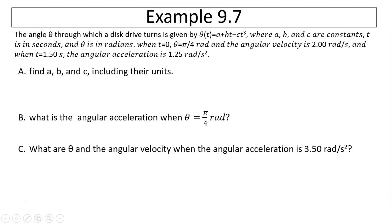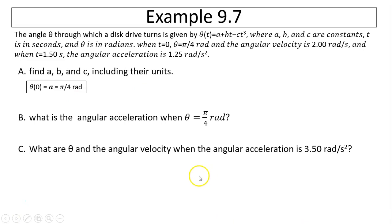Let's look at another example. The angle theta through which a disk drive turns is given by theta(t) equals a plus bt minus ct cubed, where a, b, and c are constants, t is in seconds, and theta is in radians. When t equals 0, theta equals pi over 4 radians and angular velocity is 2 radians per second. When t equals 1.5 seconds, angular acceleration is 1.25 radians per second squared. To find a, substitute theta at t equals 0: theta(0) equals pi over 4, so a equals pi over 4 radians, since the second and third terms become zero.